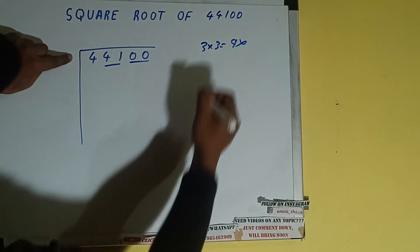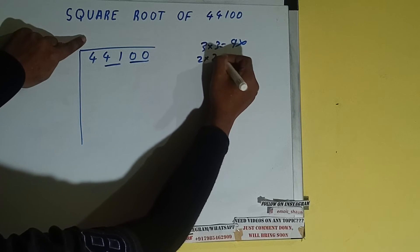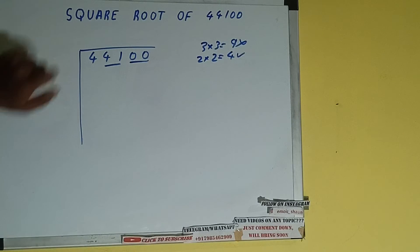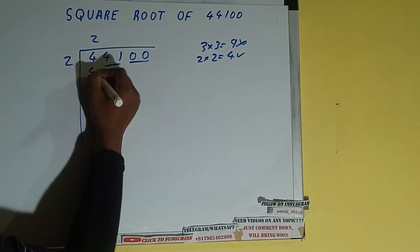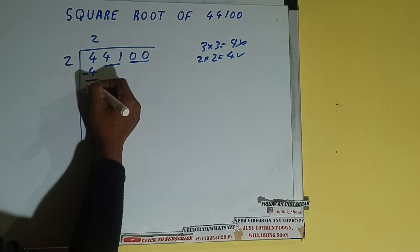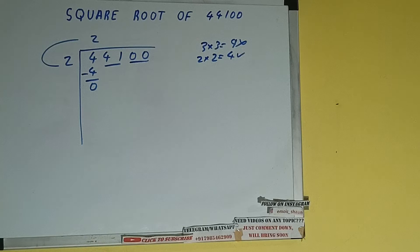So we cannot use it. If we write 2 here and 2 here it will be 4, which is good to use. So 2 here and 2 here, 4 subtract 4, 0 will be left. We did 2 into 2 so add both. So 2 plus 2 will be 4.